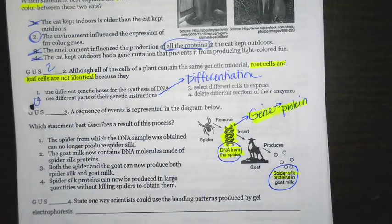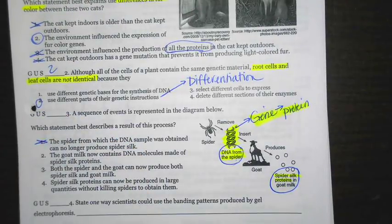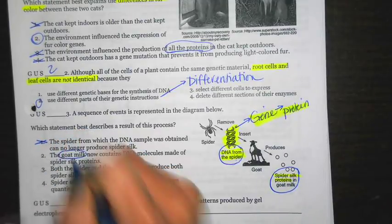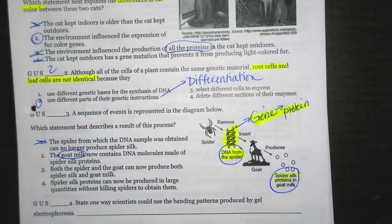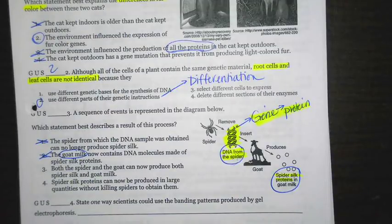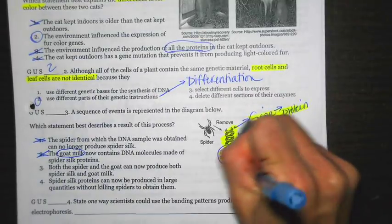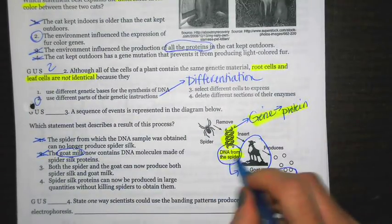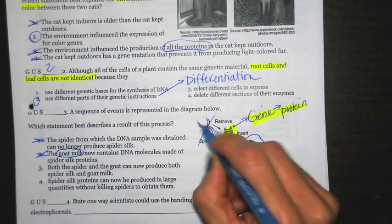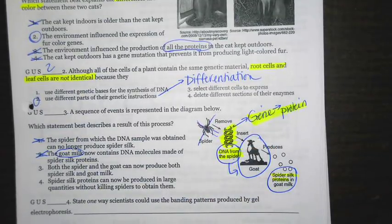Number one says, the spider from which the DNA sample was obtained can no longer produce spider milk. Well, they took a gene from just one cell of the spider. That spider is still alive. They didn't have to kill that spider. That's not correct. Number two says, the goat milk now contains DNA molecules made of spider silk proteins. No, the goat milk is still coded for by the goat's DNA. So that's not correct. Both the spider and the goat now produce both spider silk and goat milk. That's not correct because all that's happened is that they've inserted this gene into the goat, and now the goat can make spider silk. They haven't done anything to the spider other than removed one gene from one cell.